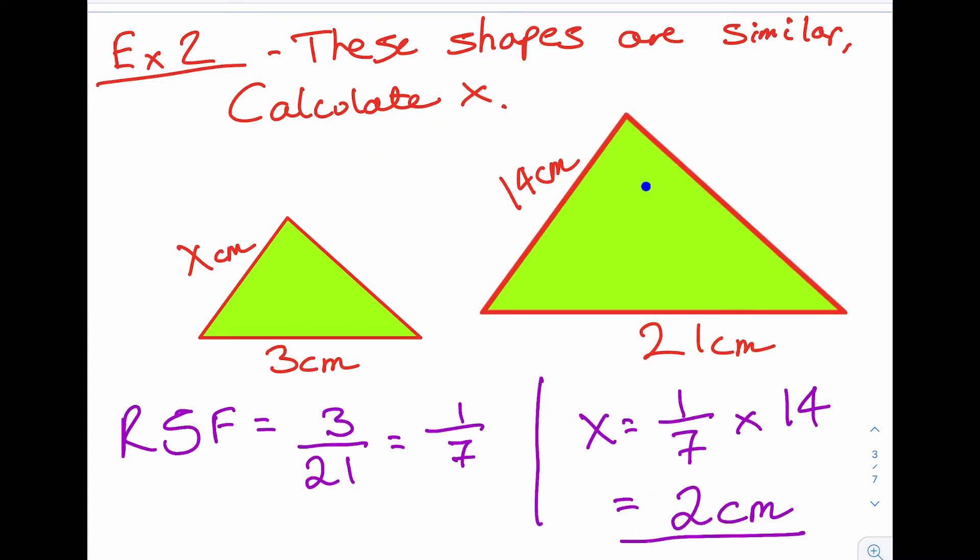So I'm dividing by 7 to go from big to small. And I'm timesing by 7 to go from small to big. So I'll just quick check. 3 times 7 is 21. 2 times 7 is 14. So I've done it correct.